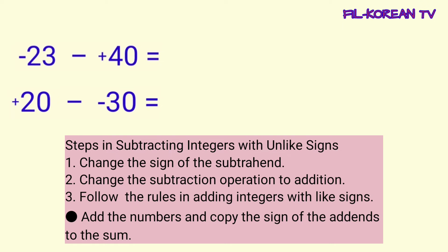To add integers with like signs, just add the numbers and copy the sign of the addends to the sum. Sa pag-subtract ng integers na magkaiba ang signs, ang gagawin natin: una, palitan ang sign ng subtrahend. Pangalawa, palitan ang subtraction operation ng addition operation.